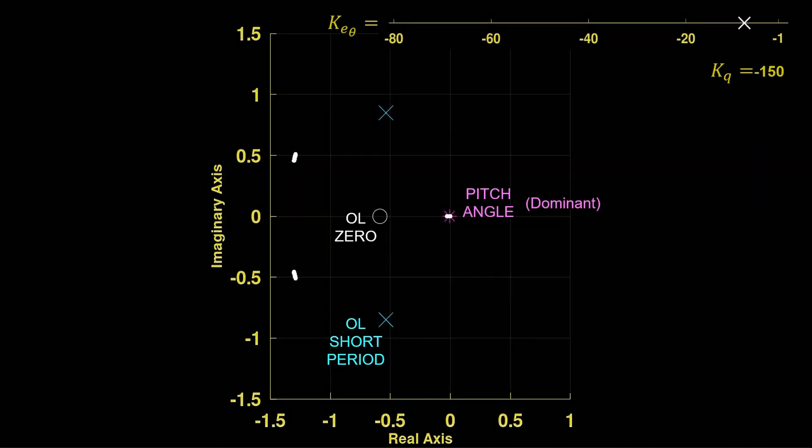The closed loop root locus illustrates the problem. As the pitch air gain is tuned for faster tracking, the dominant pitch pole approaches the open loop zero.